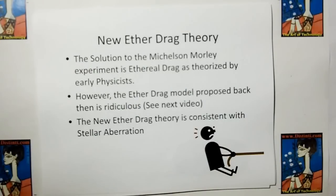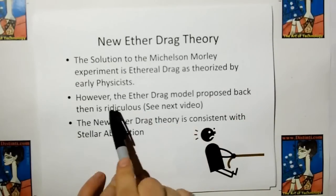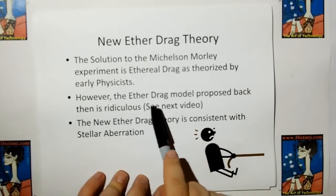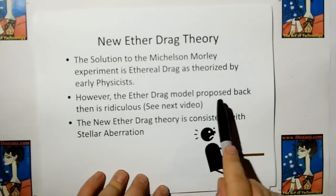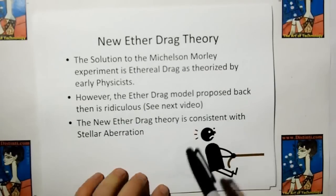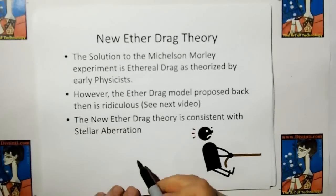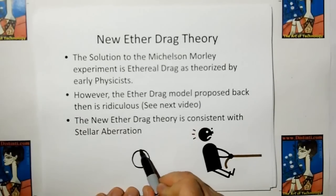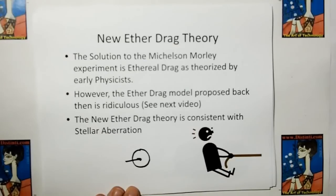The solution to the Michelson-Morley experiment is ethereal drag, as theorized by early physicists. However, the ethereal drag model proposed back then is ridiculous — and we're going to go more into this in the next video. The reason it's ridiculous is because we learned in the last video that if an object is moving with the ether, then it's moving inertiallessly.